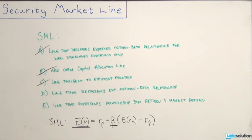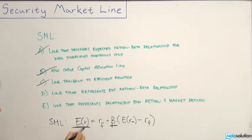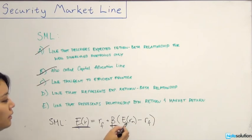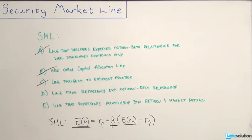Next, let's look at E — the line that represents the relationship between the individual security return and the market return. That is partially correct because the SML does describe the relationship between expected return on an individual security and the market return. But it's incomplete, as there are other elements at play. So we can eliminate E as well.